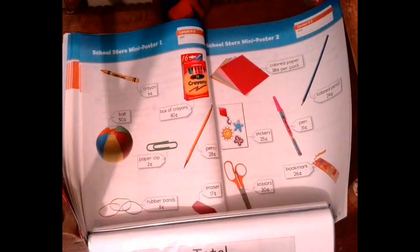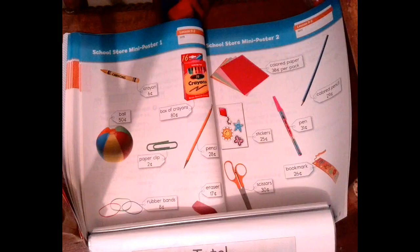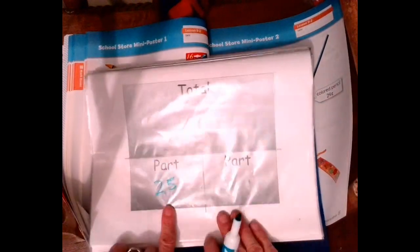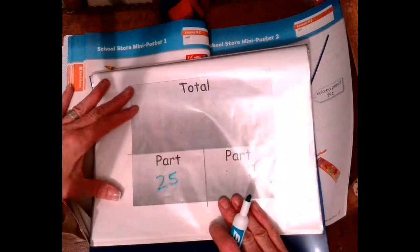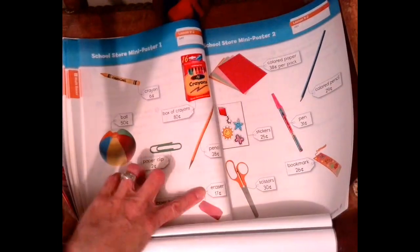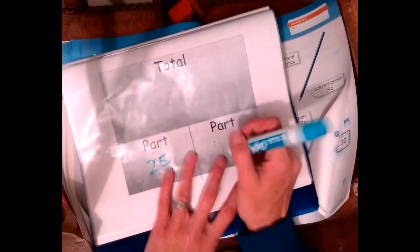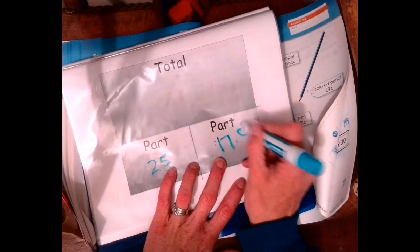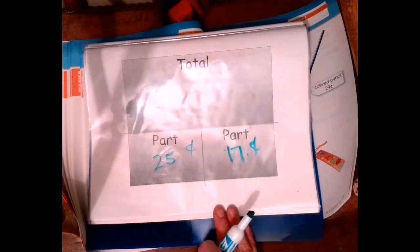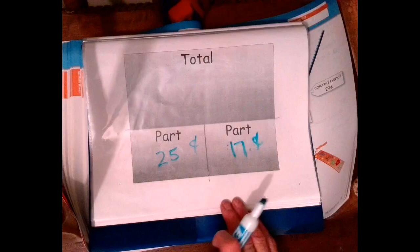If you look at the poster, stickers are 25, so I'm writing 25 cents in our parts because that's part of what we're adding together. And then 17, here's the eraser, there's 17 cents for that one, so we'll put 17 in the other parts. I'm going to put the cent sign. So we have to figure out what the total is.